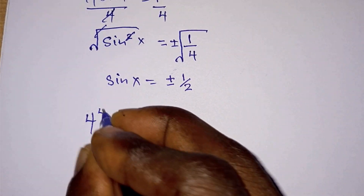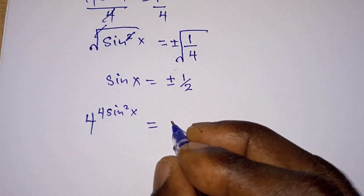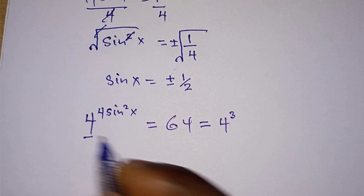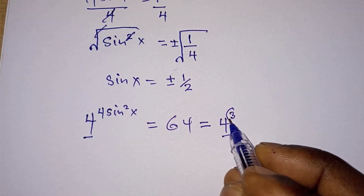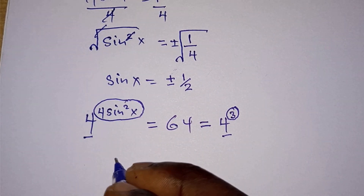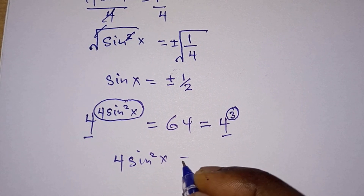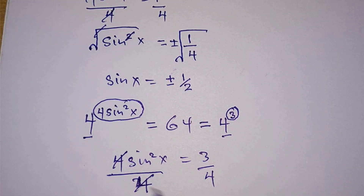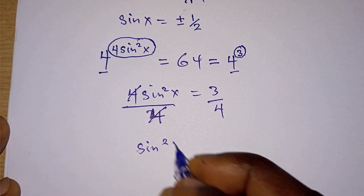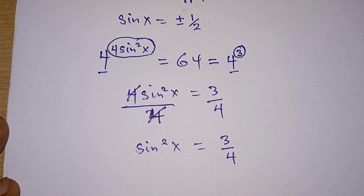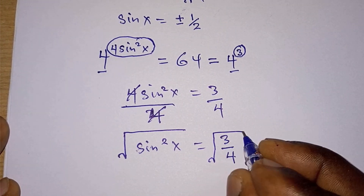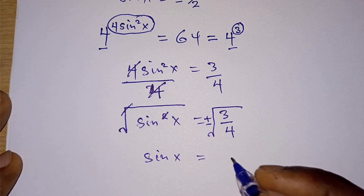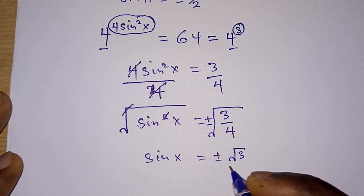When y equals 64, we have 4 to the power 4 sine squared x equals 64, and 64 can be written as 4 to the third power. Equating exponents gives 4 sine squared x equals 3, so sine squared x equals 3/4. Taking the square root gives sine x equals plus or minus square root of 3 over 2.